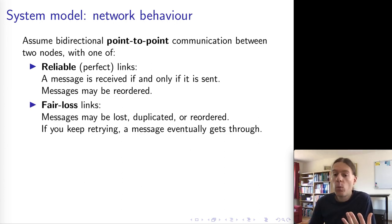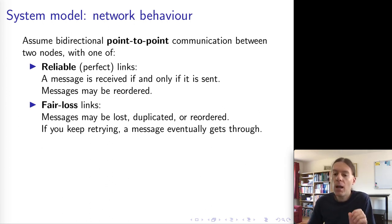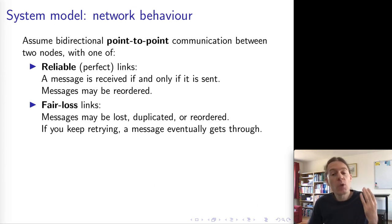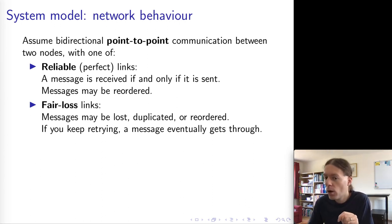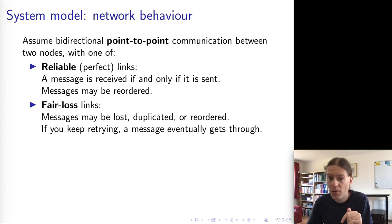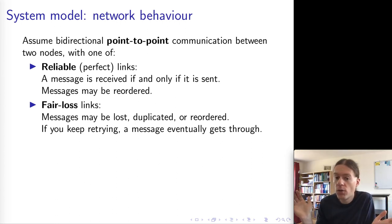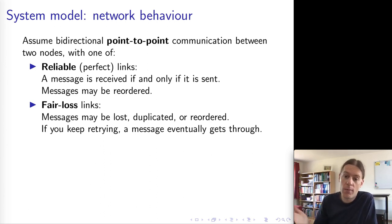The second assumption we could make about network links is what is called a fair loss link. A fair loss link is one in which whenever you send a message, it has a non-zero probability of being delivered. It might get through, it might not. But if you keep repeating the sending of that message, we assume that eventually it will get through. We don't make any assumptions about how long that might take, but assuming an infinitely long execution time, every message will at some point be delivered within a finite amount of time.